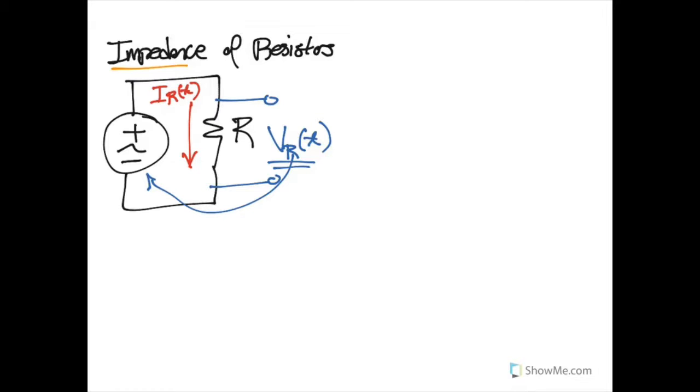Well, to start our analysis, let's recall that the impedance, and I'm going to denote it here with an R, the impedance across the resistor is the relationship of that voltage source and that current source.